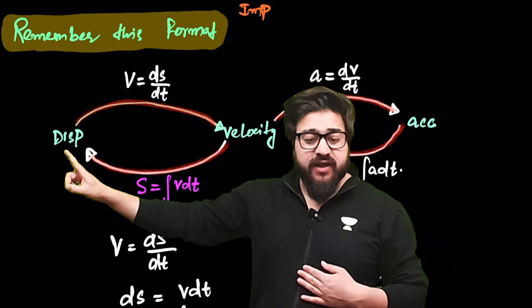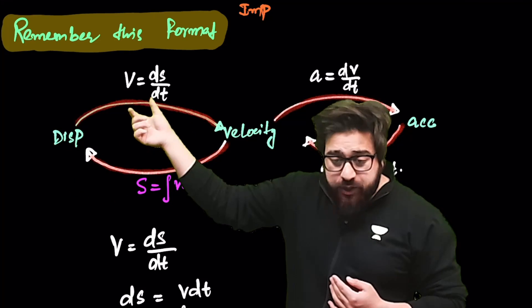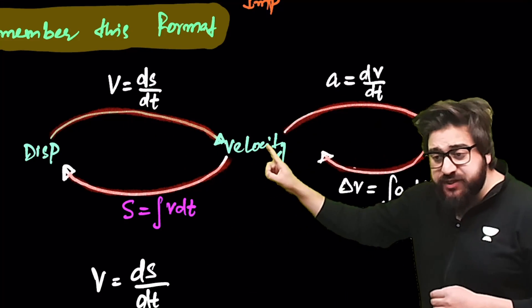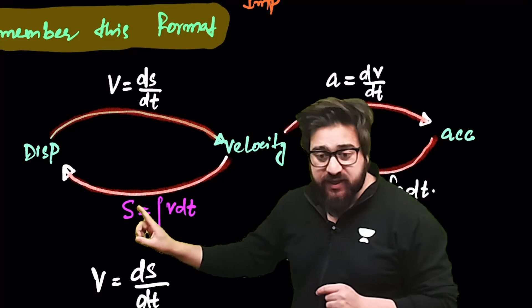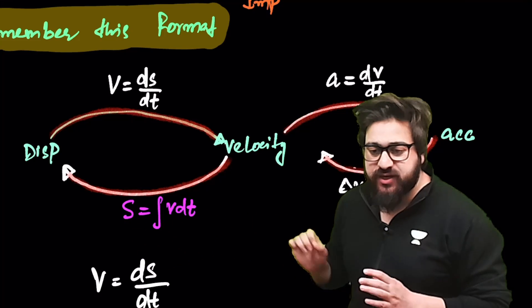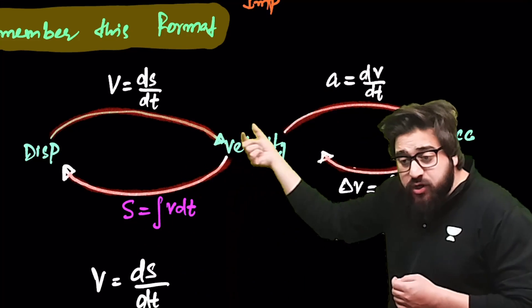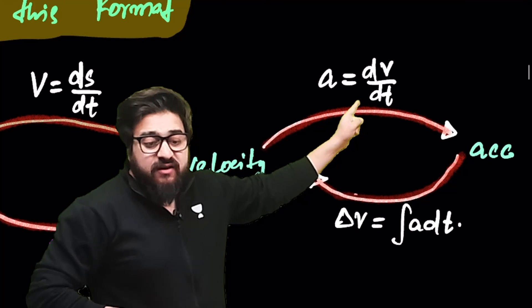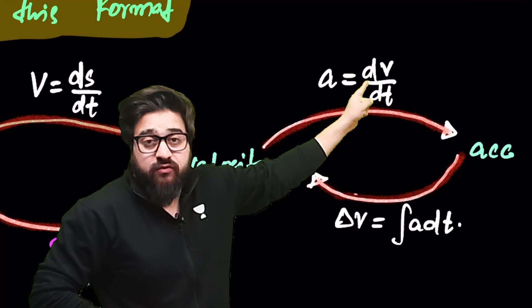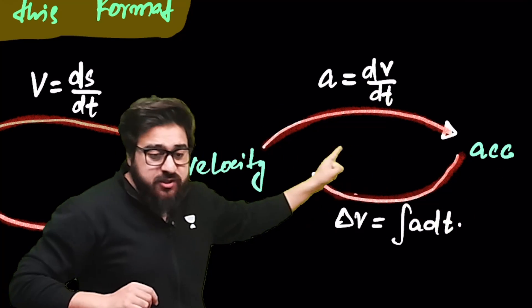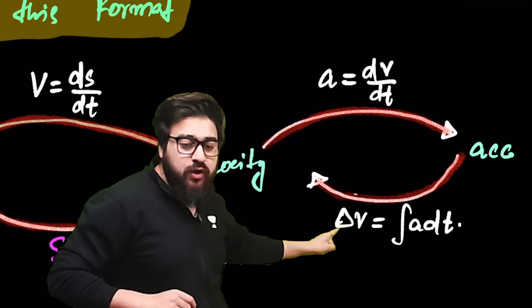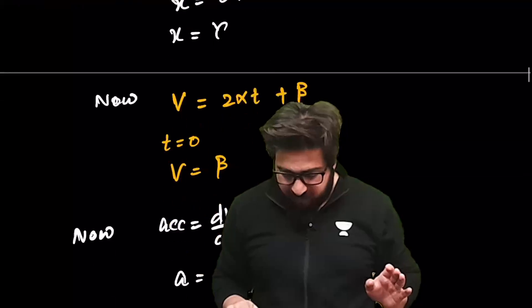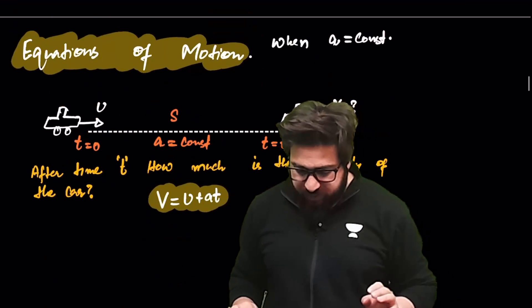The relation between acceleration and velocity in terms of displacement is: a = v · dv/ds. If displacement is given and you need velocity, differentiate: v = ds/dt. If velocity is given and you need displacement, integrate: s = ∫v dt. If velocity is given and you need acceleration, differentiate: a = dv/dt. If acceleration is given and you need change in velocity: Δv = ∫a dt.